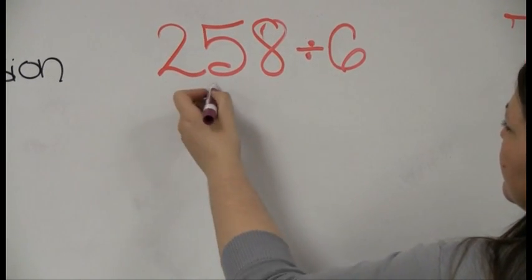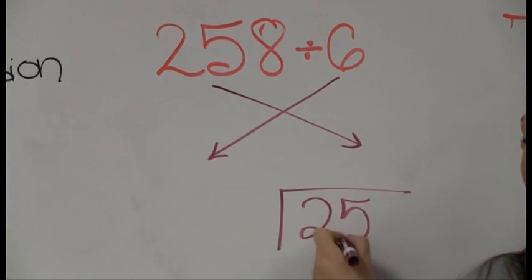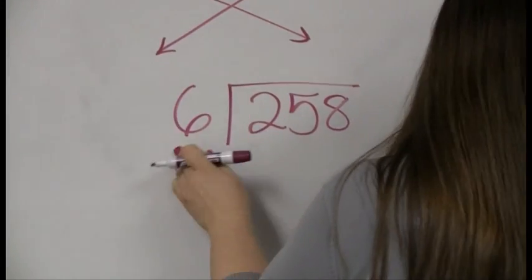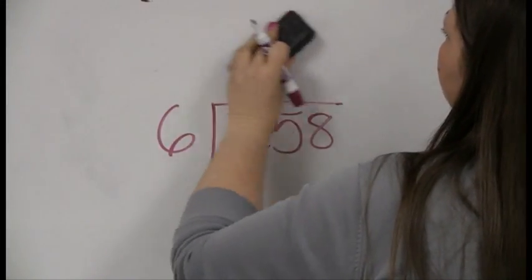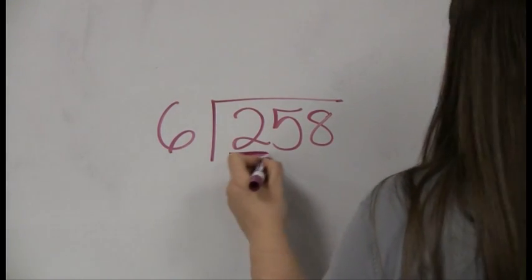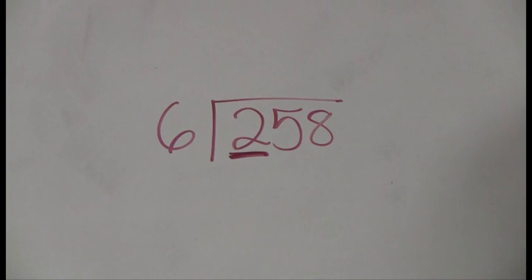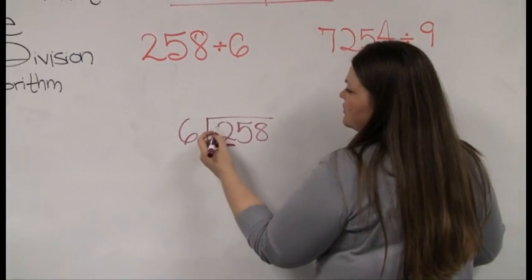Remember, long division switches order. So 258 comes inside, 6 goes outside. This says 6 into 258. So 6 goes into 2 is the number I'm supposed to start with. And this is why I wanted to start this with you. If I only have two things, there's no way I'm going to get a group of 6 out of that. So the basic idea is that 6 does not go into 2.